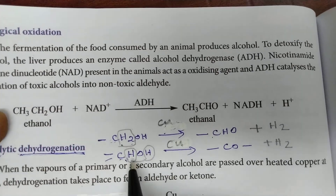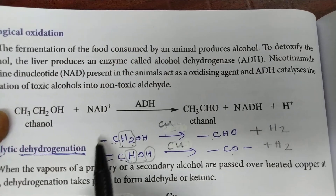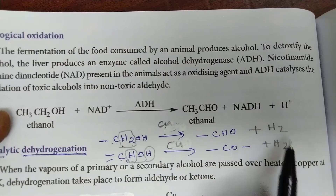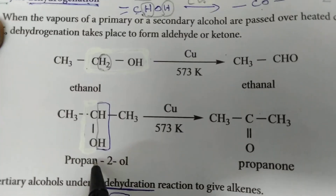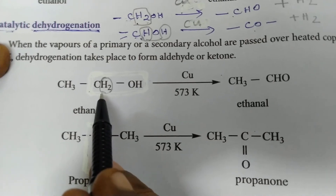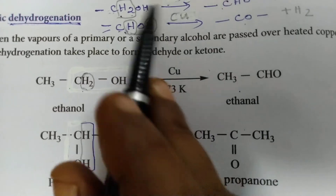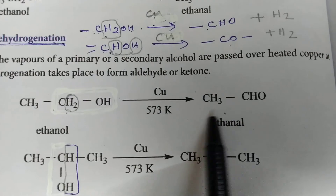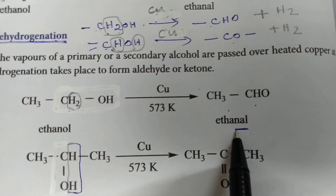From the secondary alcoholic group, two hydrogen atoms are removed and it gives a ketone group. There are two examples given: the first is primary alcohol and the second is secondary alcohol. The hydrogen atom is removed from ethanol and finally it gives the aldehyde — ethanal. Try to understand the difference between ethanol and ethanal: ethanol is the alcoholic group, and ethanal is the aldehyde group.